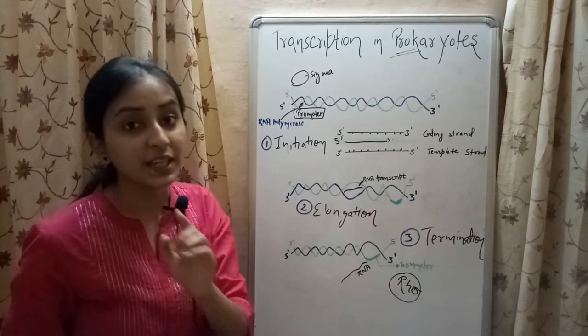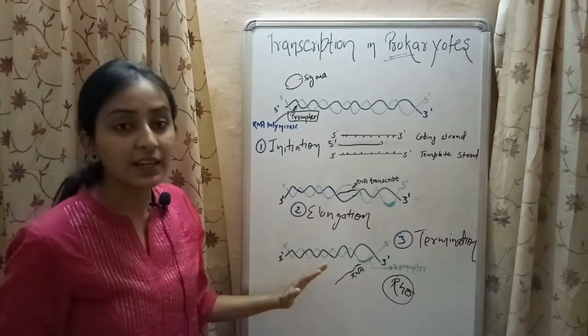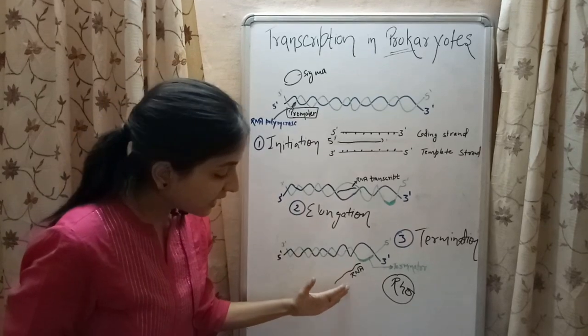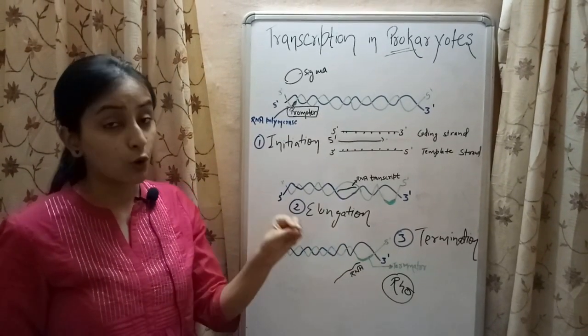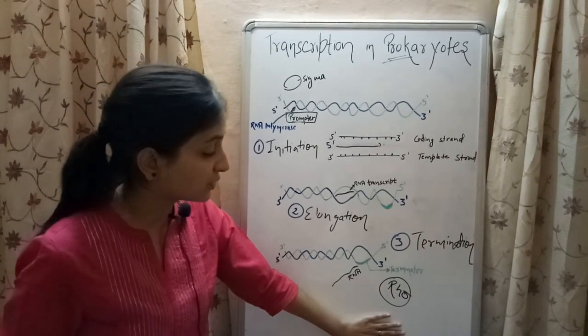Termination stage involves the event in which the RNA polymerase gets detached from the RNA transcript, and this RNA transcript is released from RNA polymerase forming a hairpin-like structure, leading to the termination of the transcription process.